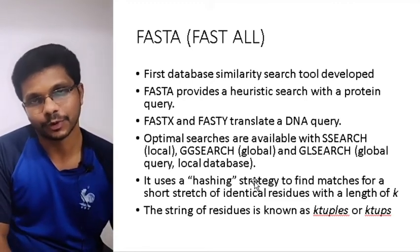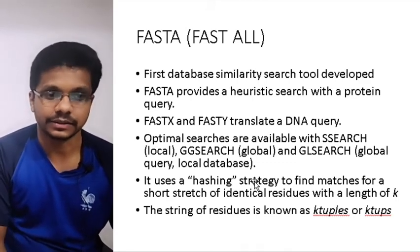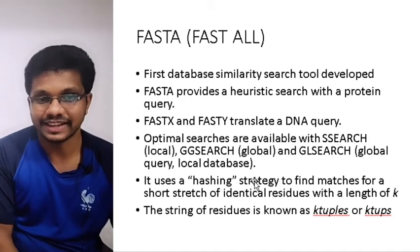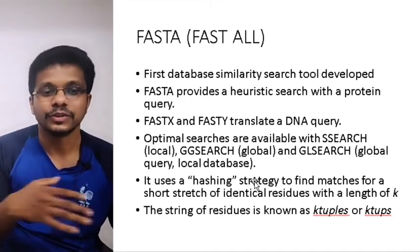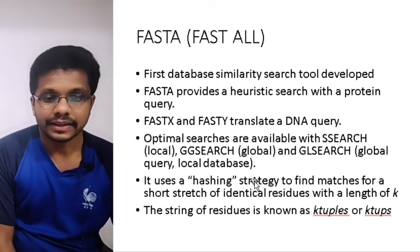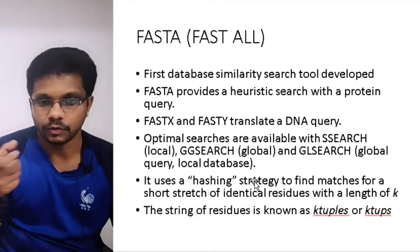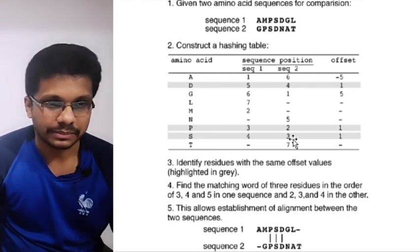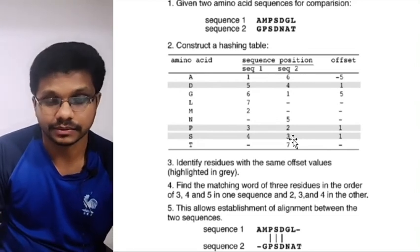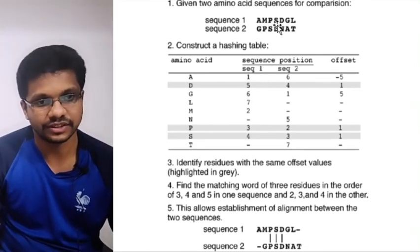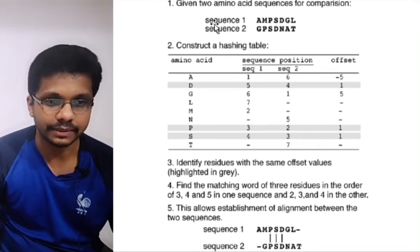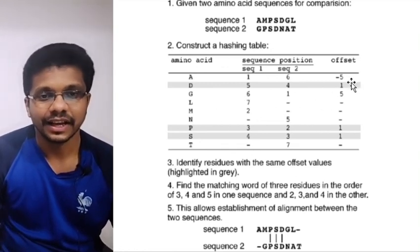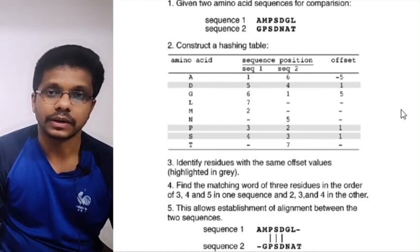FASTA provides a heuristic search method for protein queries. Extensions called FASTX and FASTY translate DNA into protein and perform searching. Optimal searches are available with S-search for local alignment, G-search for global alignment, and GL-search for global query with local database. FASTA uses a hashing strategy similar to BLAST, converting sequences into small words called k-tuples. The method is similar, but BLAST is more efficient and quicker than FASTA. Both methods build a hashing table and use a scoring mechanism to find similarity.